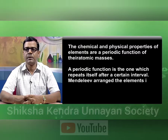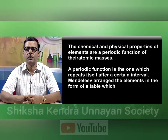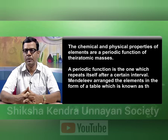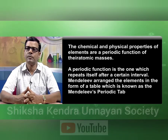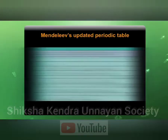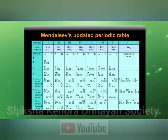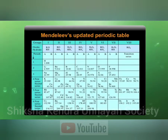Mendeleev arranged the elements in the form of a table, which is known as Mendeleev's periodic table. This is the initial periodic table given by Mendeleev.